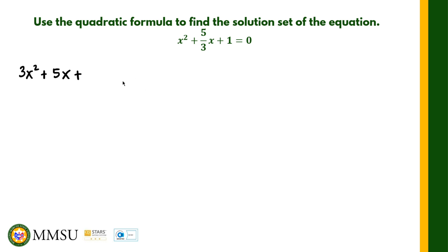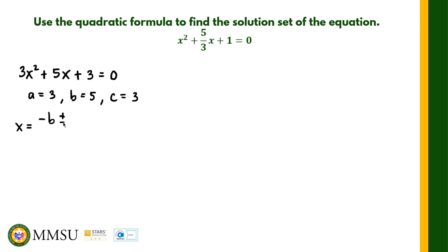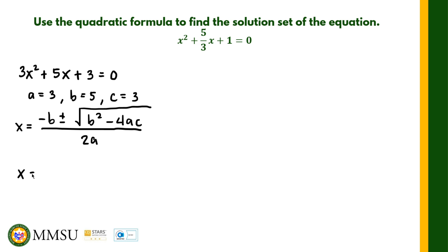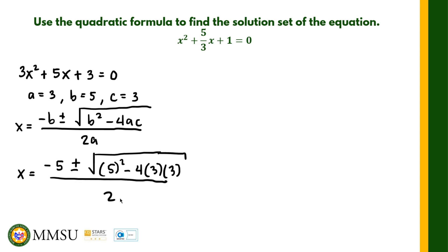We identify the values: a equals 3, b equals 5, and c equals 3. Then we substitute into the quadratic formula: x equals negative b plus or minus the square root of b squared minus 4ac, all over 2a. Substituting, that's negative 5 plus or minus the square root of 5 squared minus 4 times 3 times 3, all over 2 times 3.